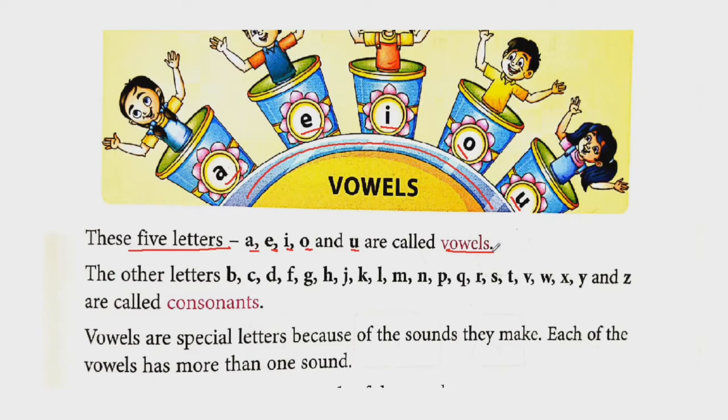The other letters, B, C, D, F, G, H, J, K, L, M, N, P, Q, R, S, T, V, W, X, Y and Z, these letters are called consonants. So the five letters A, E, I, O, U we call vowels and the letters other than vowels are called consonants.